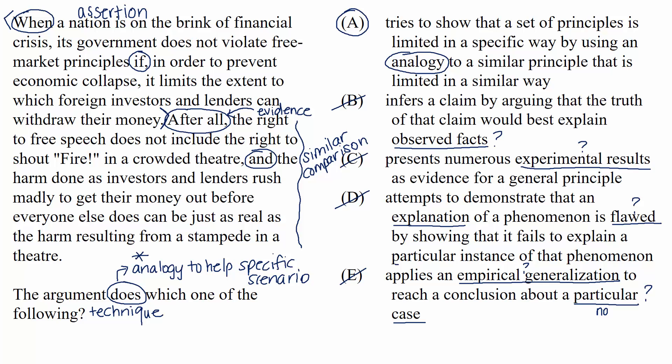And just in case you're curious, an empirical generalization is basically a general statement that's based upon experience. So, for example, if I ate an unripe orange every day for 50 years, let's say, I could make an empirical generalization that unripe oranges aren't sweet based on my experience.